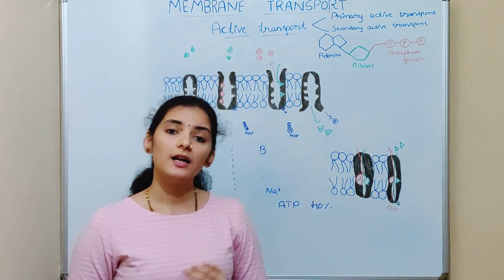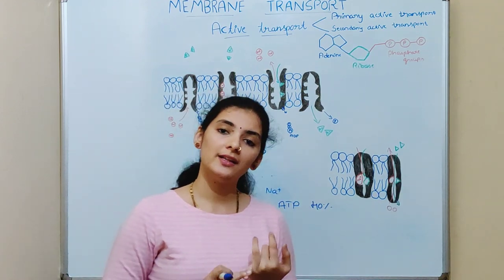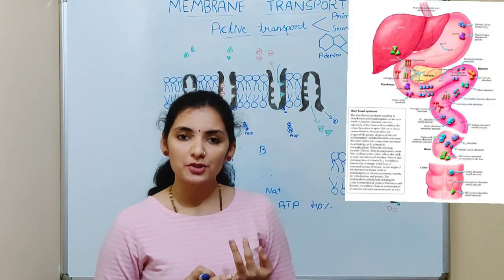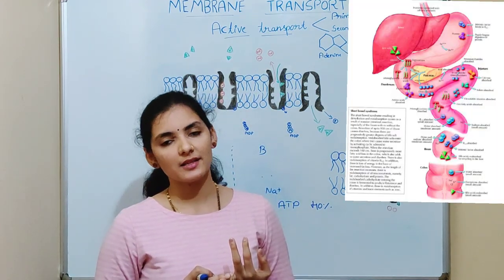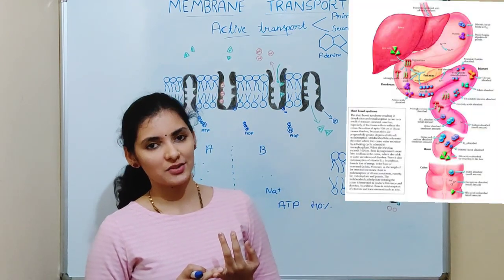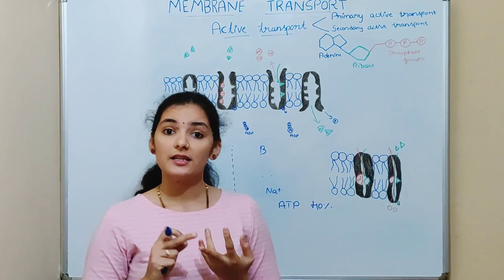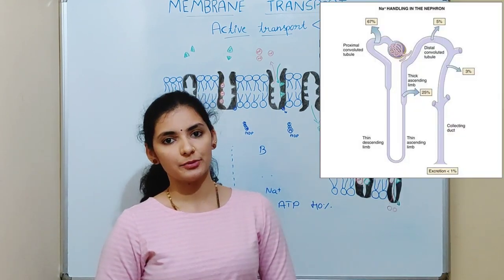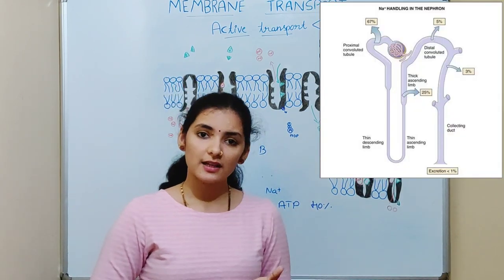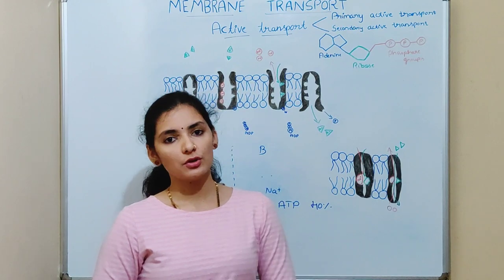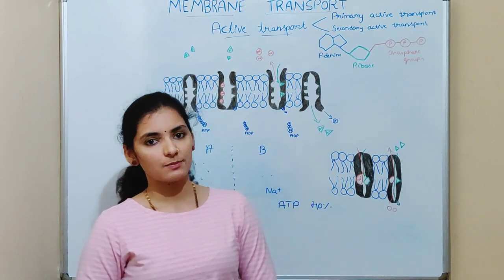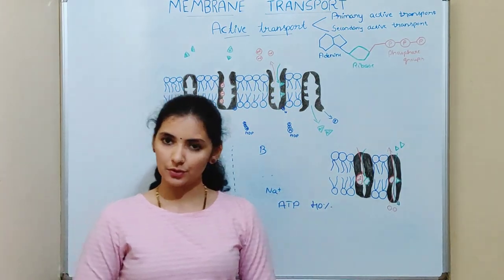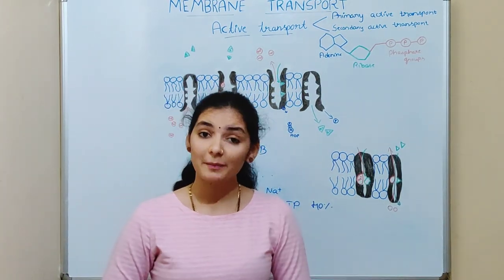Examples include the collection of iodine in the thyroid gland, reabsorption of nutrients by the cells of the digestive tract, and reabsorption of sodium by the renal tubules. In all these cases, the movement of molecules takes place via active transport only.